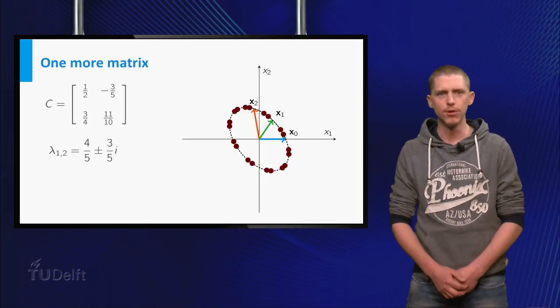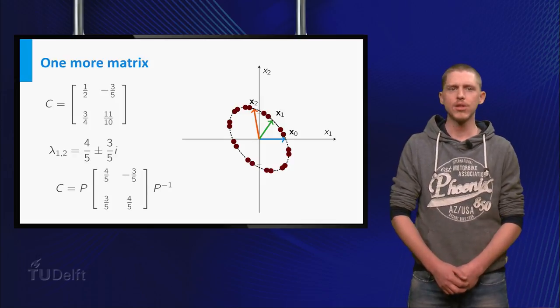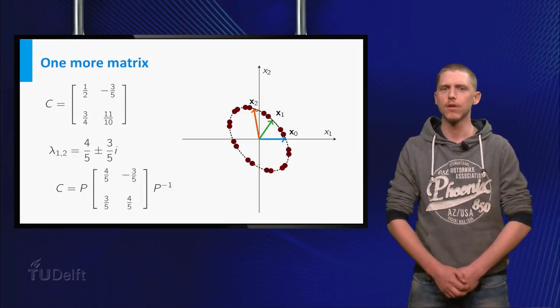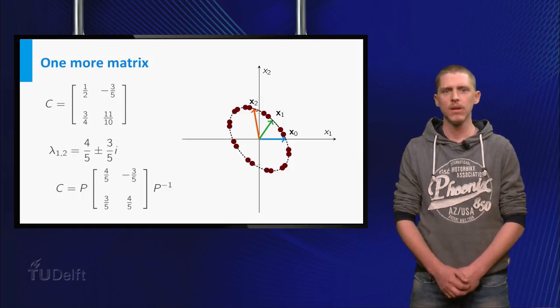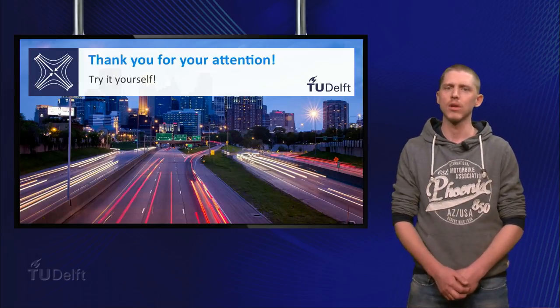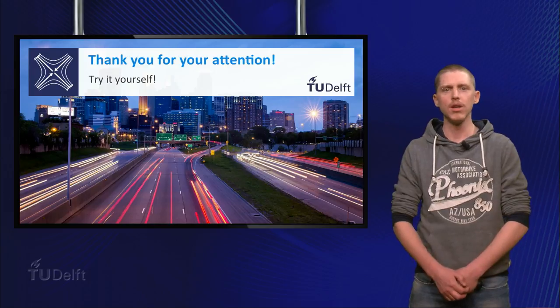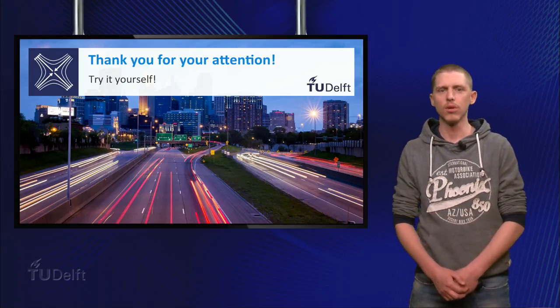As it turns out, this is true. You can show that C is similar to a rotation matrix, where the rotation occurs in a different coordinate system. In class, you will learn more on complex eigenvalues and eigenvectors. You will also discover the relation between similarity and coordinate transformations.